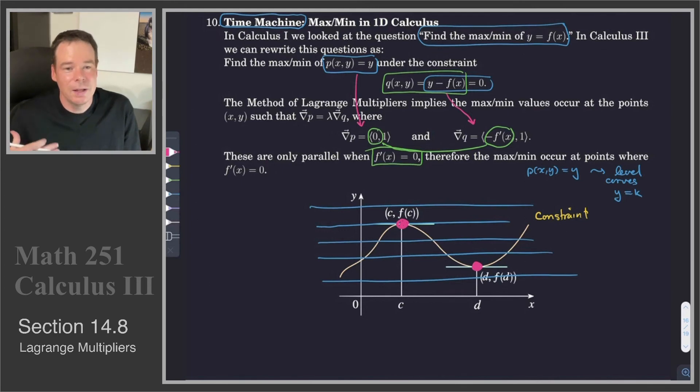So that's, again, looking at an old problem, taking our time machine back, going to Calculus 1, looking at this problem of finding maximins there, and realizing that our techniques for solving maximin problems in multivariable calculus, we can apply those same techniques back to functions of a single variable.